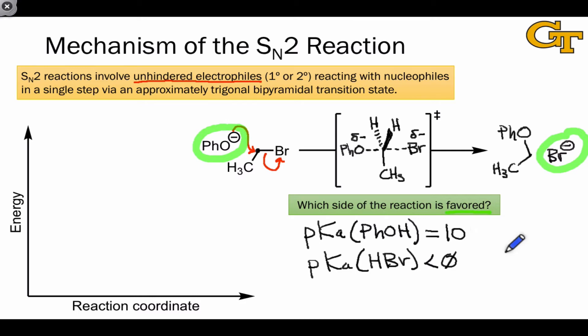The fact that HBr is a much stronger acid than phenol tells us that the conjugate base of HBr is much more stable than the conjugate base of phenol. In other words, bromide is much more stable than phenoxide.